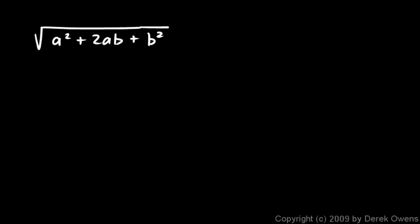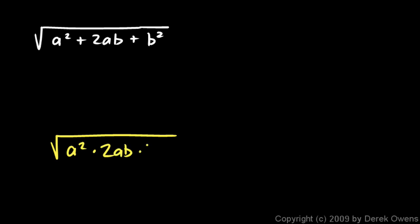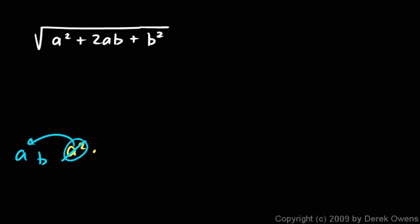These last two examples are a little bit different. The square root of a squared plus 2ab plus b squared. Now don't say the a squared is going to pop out of here and become an a, and the b squared is going to pop out and become a b — you can't do that. You can only do that if you have perfect square factors. These things are not factors; they are all added together — these are terms of this expression. This expression has three terms but they're not factors. If we had a squared times 2ab times b squared, then the a squared could become an a and the b squared could become a b. But instead of multiplication we have addition.